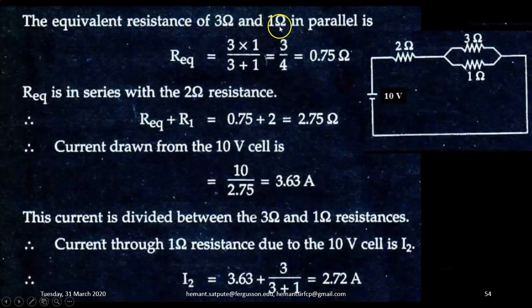So equivalent resistance of 3 and 1 ohm in parallel will be equal to 3 by 4 that is 0.75. Now this 0.75 is in series with 2 ohm resistance. So total resistance comes out to be 2.75. So current drawn from 10 volt cell will be equal to 10 upon 2.75 that is 3.63 ampere.